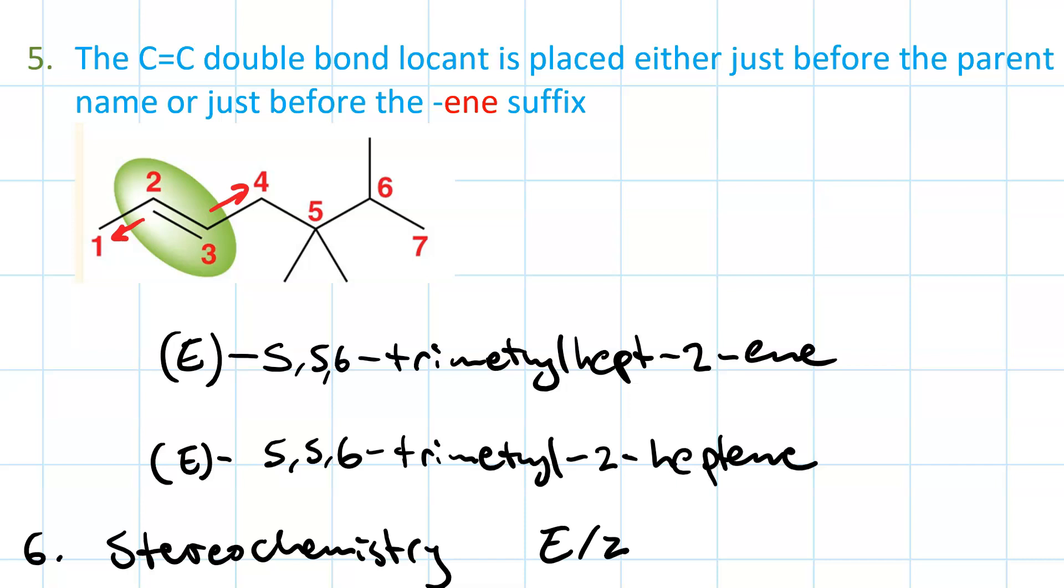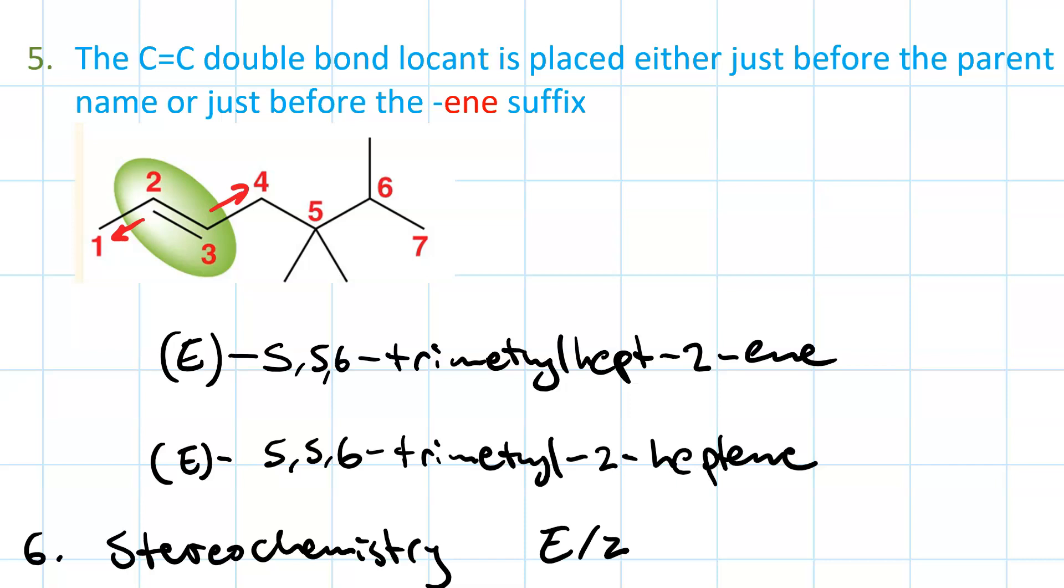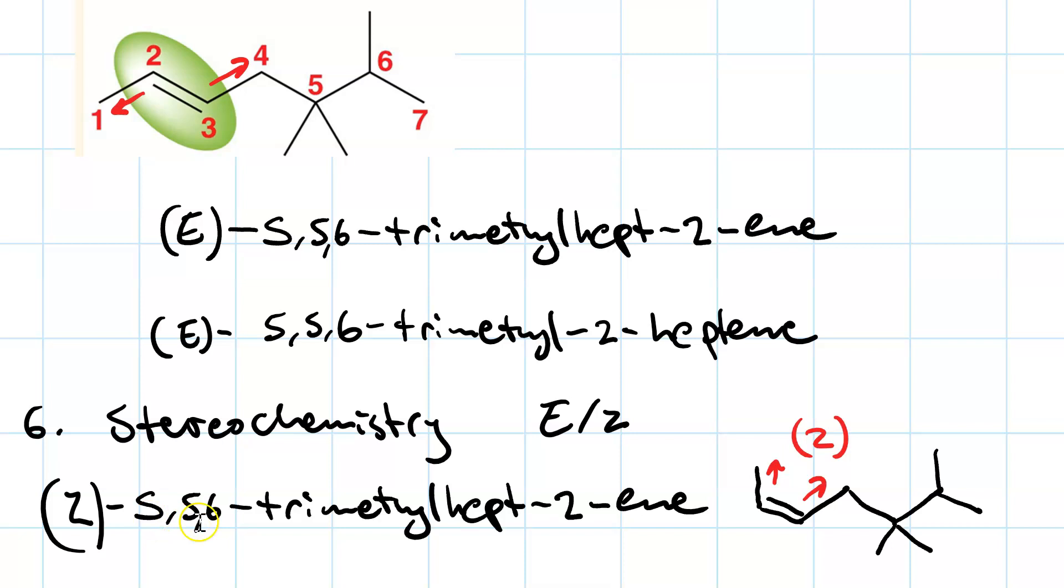The Z isomer would look just a little bit different. So what I've done is I've just flipped the methyl group pointing up. And now my two important groups are pointing in the same direction. So that's Z. The rest of the name would be the same. So here we'd have (Z)-5,5,6-trimethylhept-2-ene.